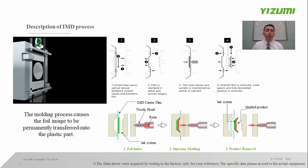But what process is IMD? Let's take a brief look at these steps. This is the IMD film, which has printed patterns and printing ink. After the film feeding, the film stops at a certain position in the mold. In the second step, it sticks onto the surface of the mold by vacuum. In the third step, the mold closes for injection. After the injection, the mold opens and the printing ink on the film transfers to the surface of the product, and the product is completed.